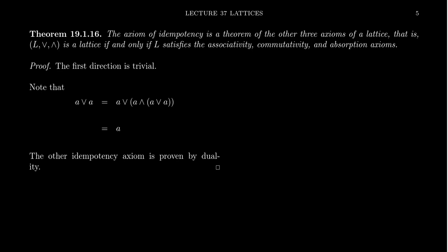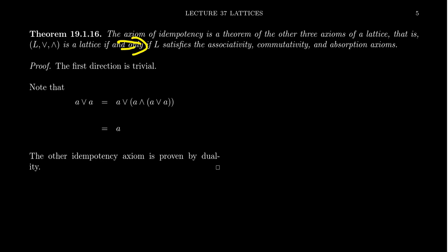It turns out the axiom of idempotency is not necessary when defining a lattice. I included it originally to show that a lattice is two semi-lattices glued together using absorption. But because of the absorption axioms, idempotency follows automatically. That is, the set L equipped with join and meet is a lattice if and only if the two operations satisfy the associative, commutative, and absorption axioms — idempotency is redundant. The non-trivial direction to prove is that from just these three axioms, we can derive that elements are idempotent with respect to both meets and joins.